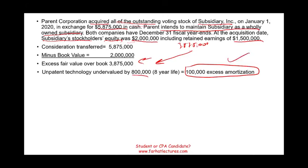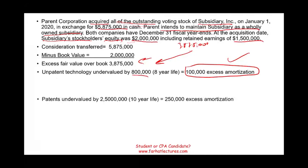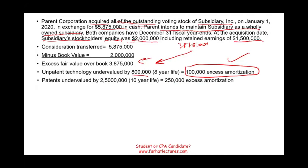That's not enough. Of the $3,875,000, we only used $800,000. We also have a patent that's undervalued by $2.5 million with a 10-year life. Of the $3,875,000, we're going to assign $2.5 million to that undervalued patent. When you create a patent you cannot capitalize it, but if somebody buys your company, they have the right to assign a value to that patent. So that patent is worth $2.5 million, serving us for 10 years — therefore we have an additional excess amortization of $250,000.